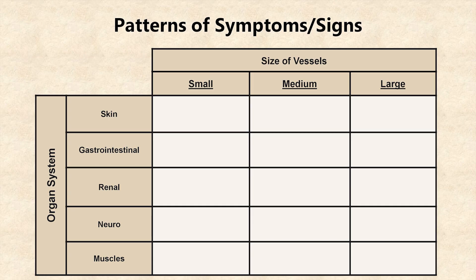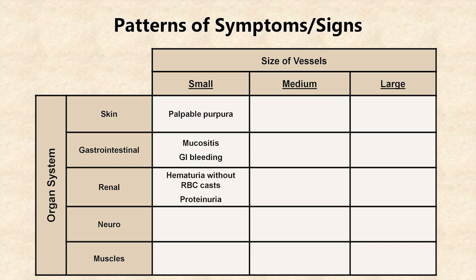When a patient has a vasculitis affecting the small blood vessels, he or she can get a skin condition called palpable purpura. GI involvement leads to mucositis and minor GI bleeding. The glomeruli of the kidneys are affected, which most commonly manifest as hematuria without red blood cell casts, and proteinuria. Patients can get a polyneuropathy, and muscle involvement results in myalgias, which is a fancy word for muscle pain.